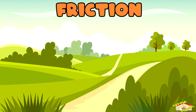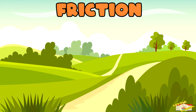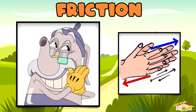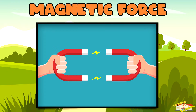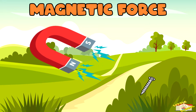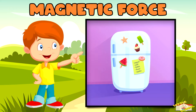Friction is a force that slows down or stops things when they rub together. For example, rubbing your hands together to make them warm. Magnetic force pulls or pushes objects made of iron or steel. For example, magnets sticking to your refrigerator.